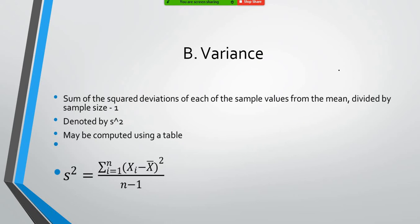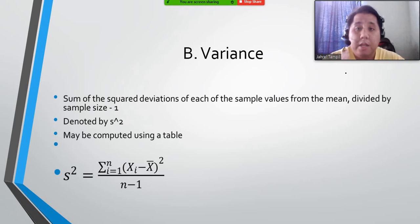The next measure of variation is variance. The variance is the sum of the squared deviations of each of the sample values from the mean divided by sample size minus 1. Denoted by S squared, it may be computed using a table or it may also be computed using the formula that you see.